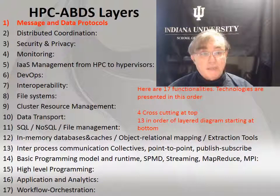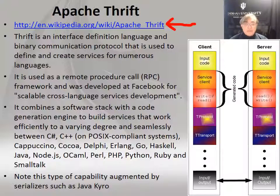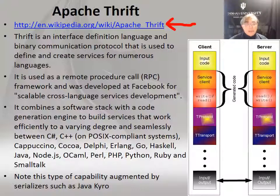First we're going to do level one, and that's messaging and data protocols. Here we have three particular technologies: Thrift, Protobuf, and Avro. Thrift and Avro are Apache. In these slides we try to give you a reference and a title. These three are all aimed at the same general problem — an area that's been important for a long time. We need to communicate by messages between particular components, often services.